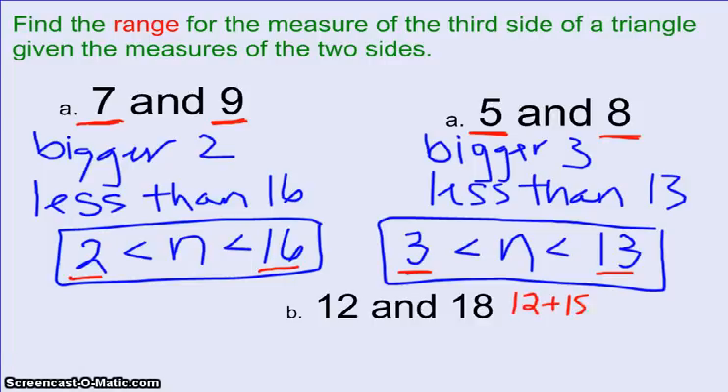So if you follow this pattern to do our last example of 12 and 18, if we add 12 and 18, we get 30. And then if we subtract 18 minus 12, we get 6. So that would tell me that my range, that third side, has to be bigger than 6, but less than 30. Now, if you use this trick of just adding the numbers together and subtracting the numbers, that's great. You'll get the right answer, but just keep in mind when you do the subtracting, always do the bigger number minus the smaller number so you get a positive answer. You can't have a negative side length.